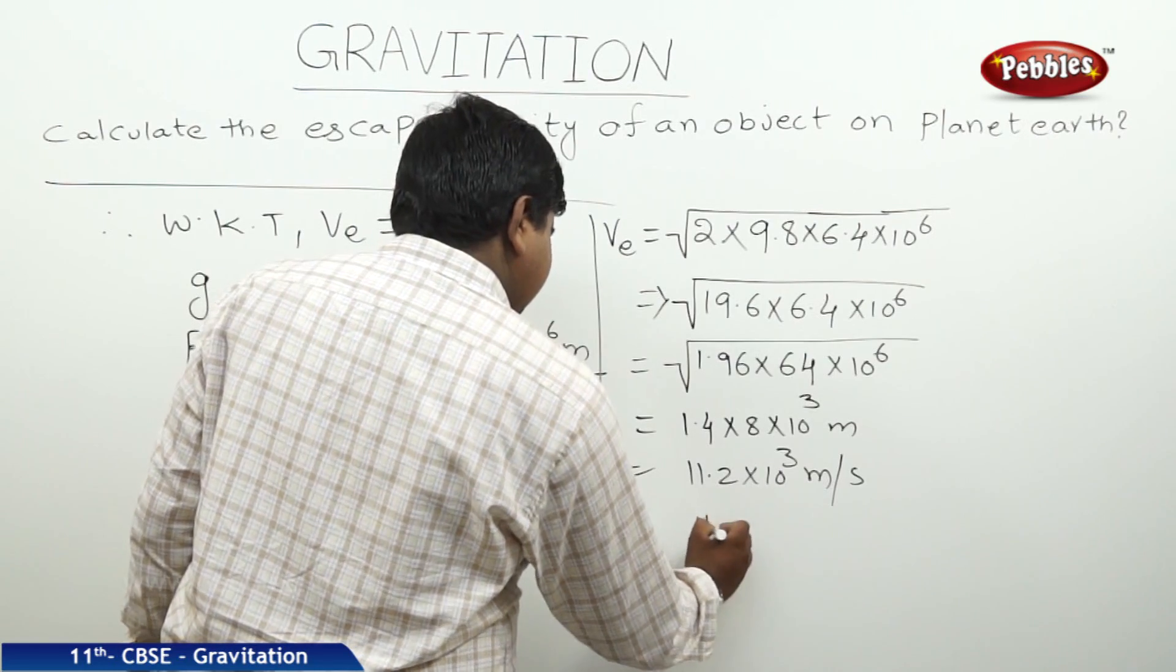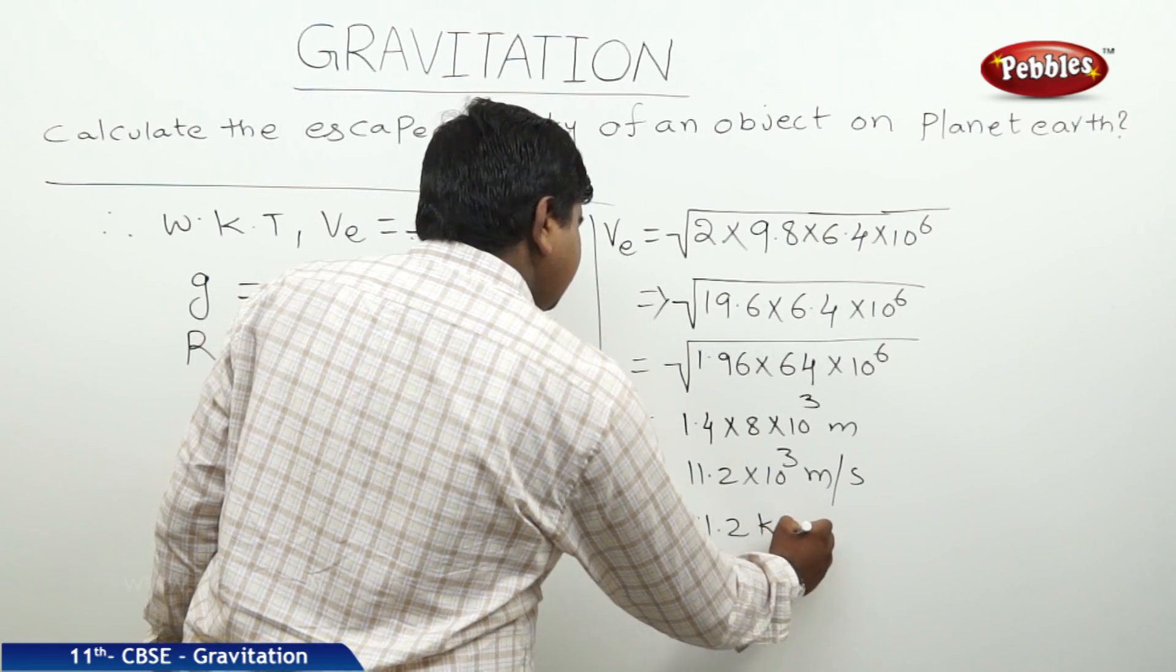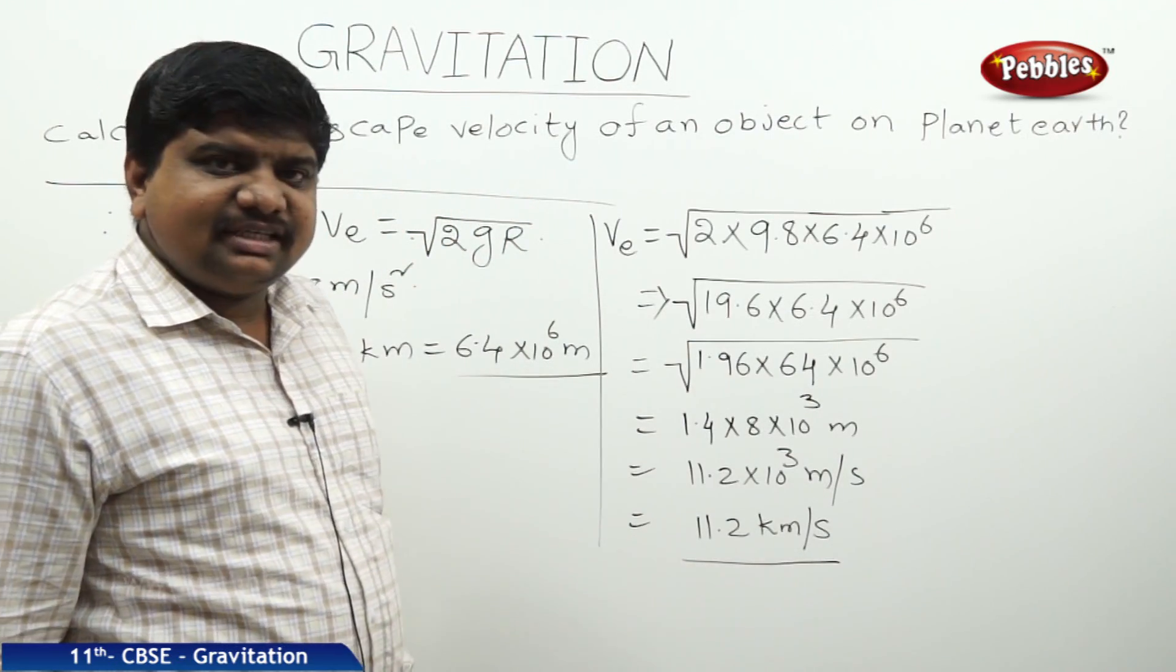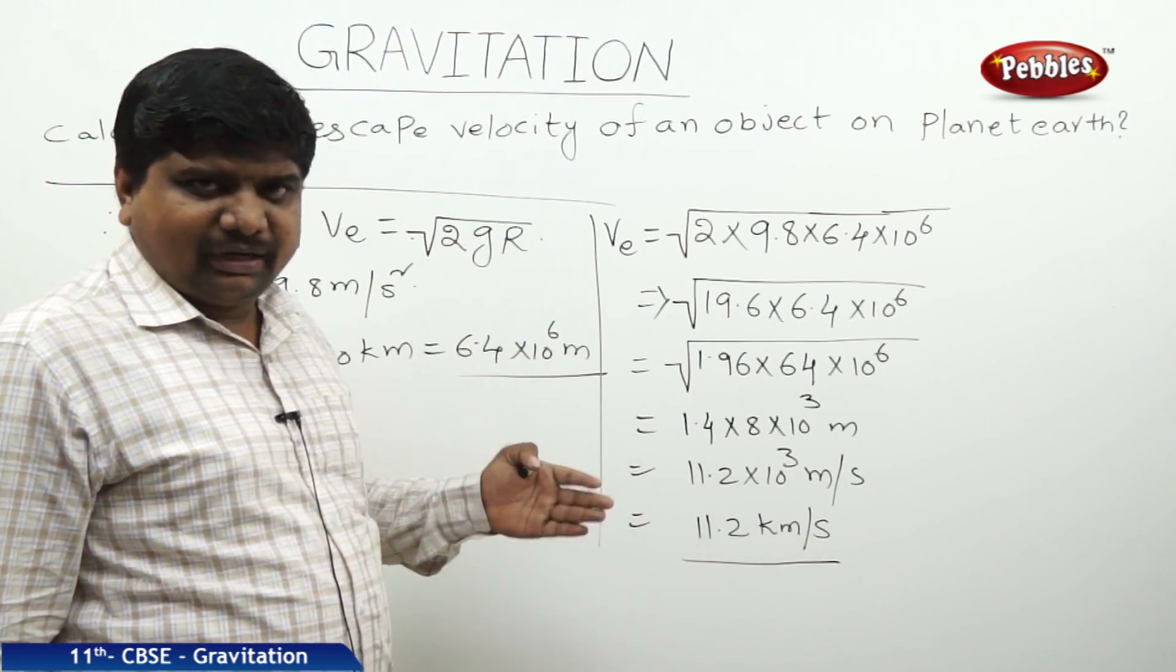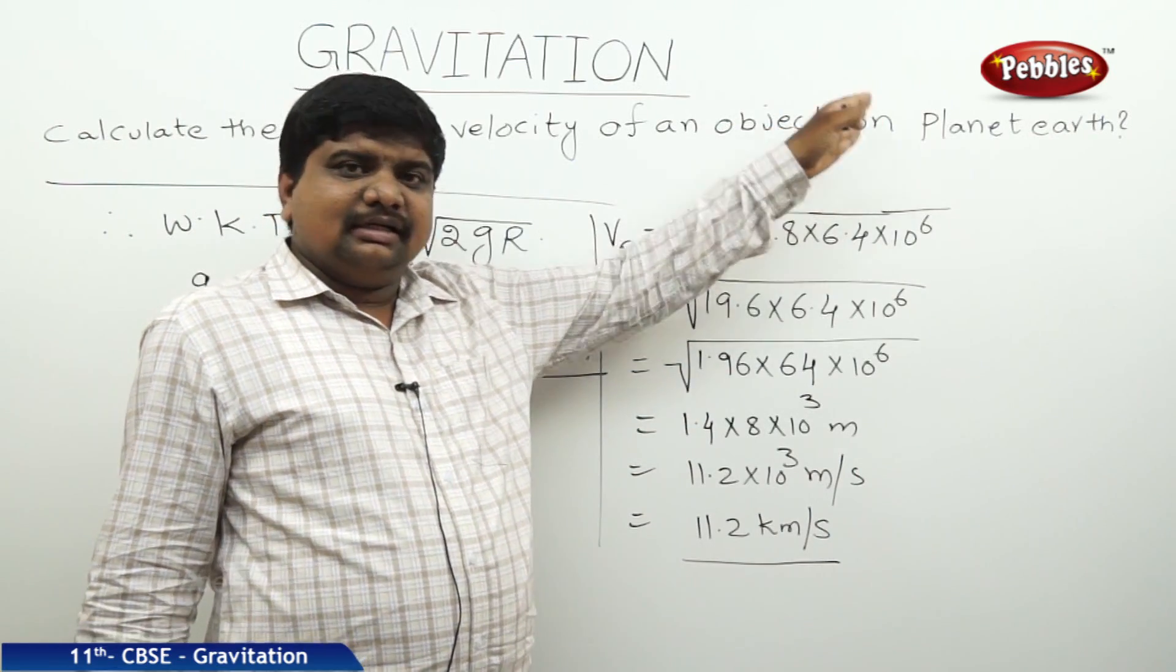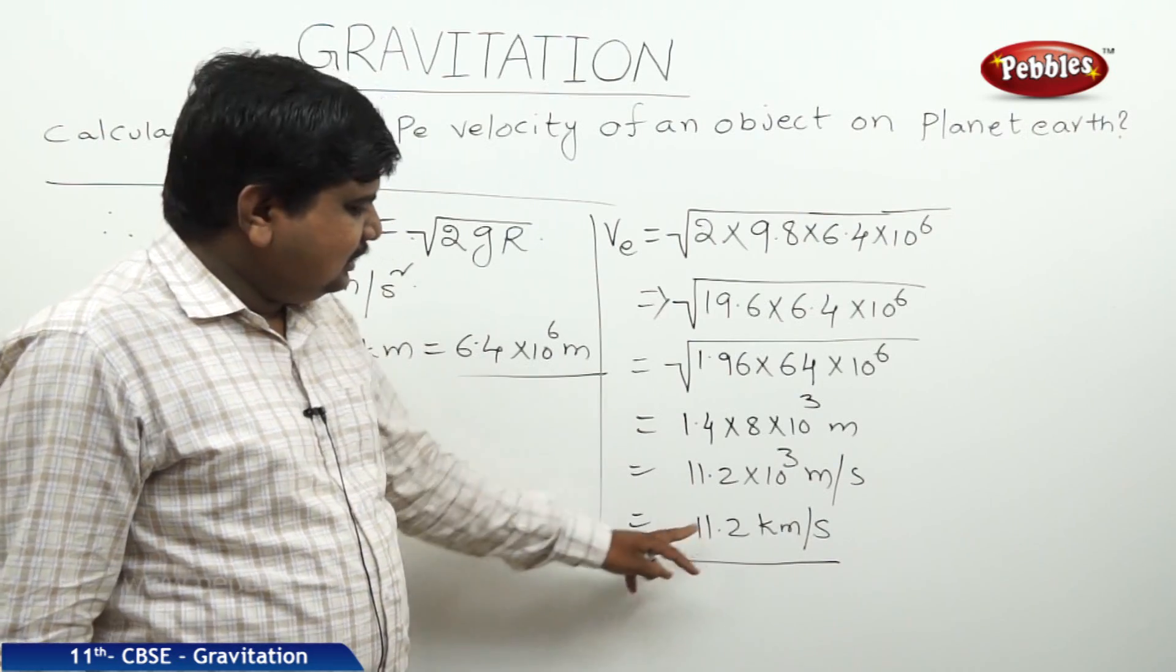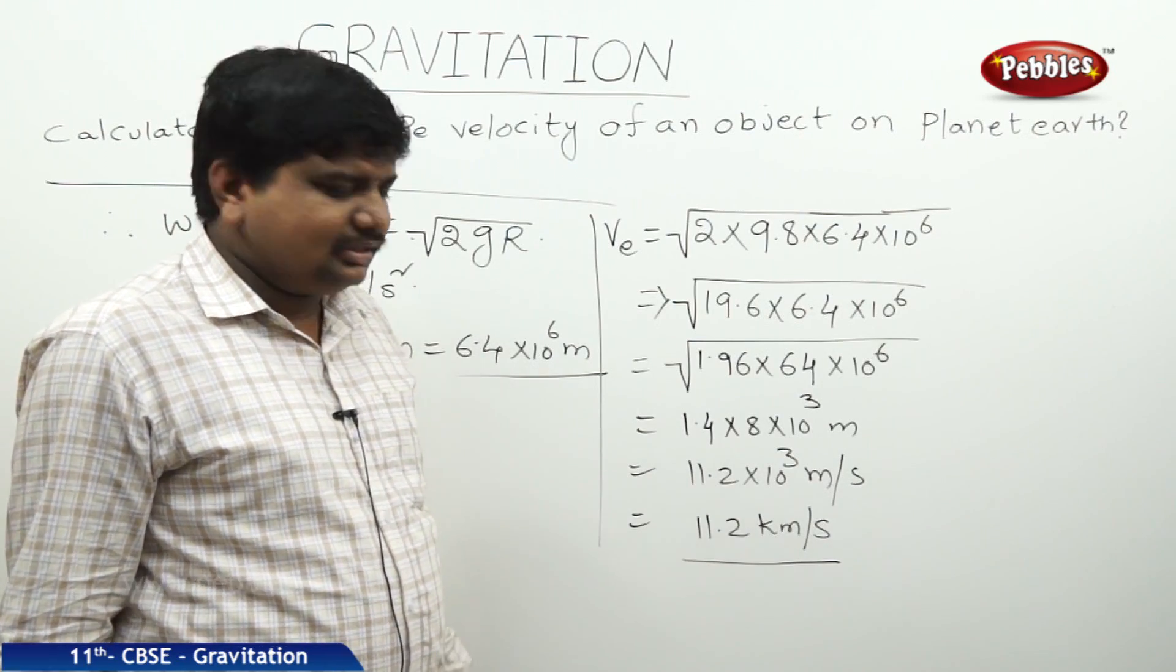It will be written as 11.2 kilometers per second. This should be the escape velocity of an object or any other satellite which is on the surface of planet earth. This is equal to 11.2 kilometers per second.